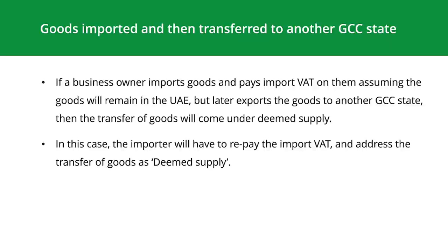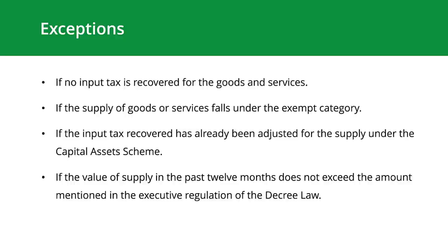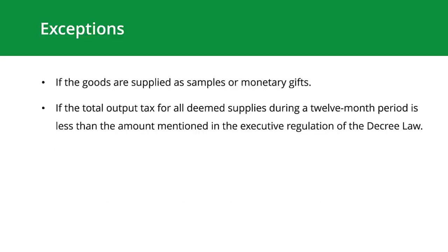There are certain exceptions to deemed supply. A supply will not be categorized as deemed supply if: no input tax is recovered for the goods and services; the supply falls under the exempt category; the input tax recovered has already been adjusted under the capital asset scheme; the value of supply in the past 12 months does not exceed the amount in the executive regulation; the goods are supplied as samples or monetary gifts; or the total output tax for all deemed supplies during a 12-month period is less than the amount mentioned in the executive regulation.